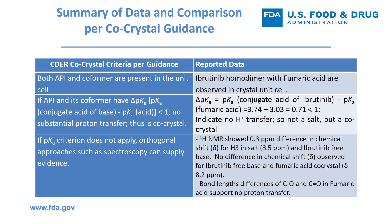Criteria number three: if the pKa criterion does not apply, orthogonal approaches such as spectroscopy can supply evidence. For the Ibrutinib–fumaric acid case, there are two additional pieces of evidence. Evidence one: proton NMR showed a 0.3 ppm difference in chemical shift for hydrogen 3 in the pyrimidine ring in the salt versus Ibrutinib free base, but no difference in chemical shift was observed between Ibrutinib free base and the fumaric acid co-crystal. Evidence two: the difference in bond length between the carbon-oxygen single bond and carbon-oxygen double bond in fumaric acid supports no proton transfer.